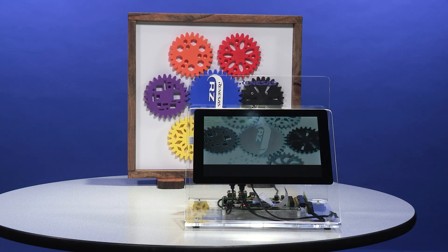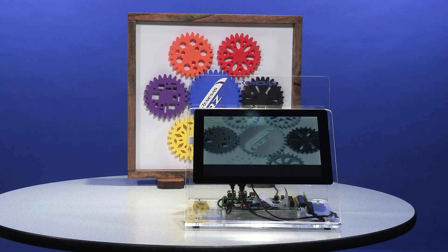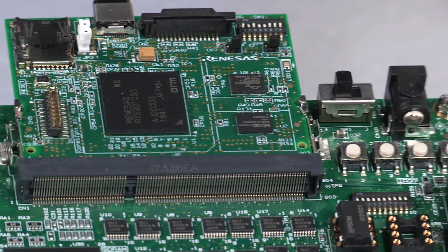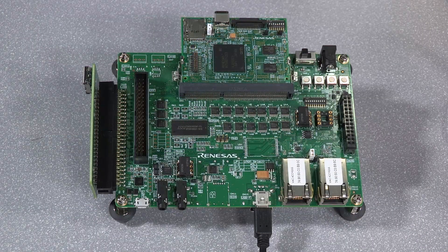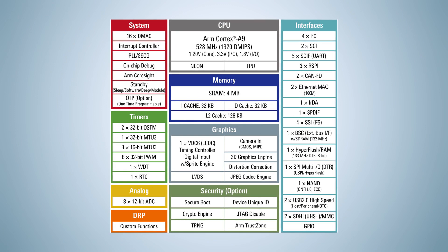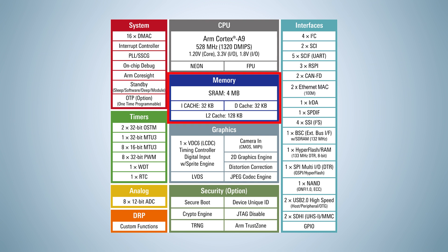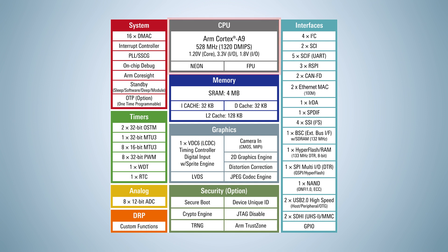To demonstrate the video pre-processing capabilities of DRP technology, we use an RZ-A2M evaluation kit to build a system that implements a variety of filters. The RZ-A2M MPU provides built-in MIPI-CSI input support for connecting a low-cost MIPI camera. On-chip RAM holds program and video data. The ARM CPU coordinates video input from the camera and video output to the display, while the DRP coprocessor handles the image processing algorithms.